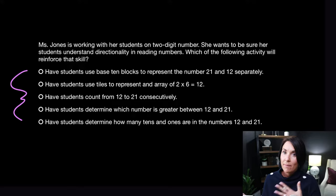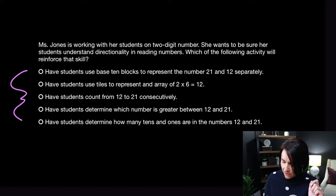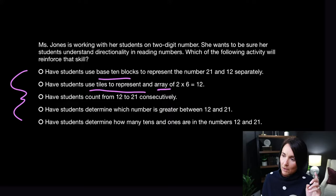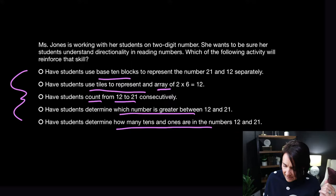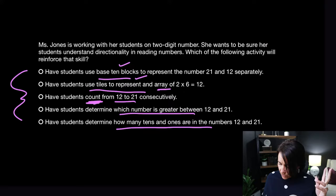On a math exam you may not be able to find the correct answer right away by working backwards, but by reading the answer choices first you can understand what you're being asked to do. The answer choices here are: have students use base 10 blocks to represent 21 and 12 separately; have students count from 12 to 21; have students determine which number is greater between 12 and 21; and have students determine how many tens and ones are in 12 and 21. I can see we're looking at different skills and manipulatives — base 10 blocks, tiles, counters.